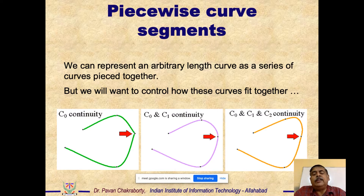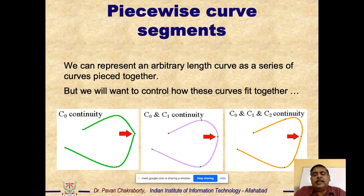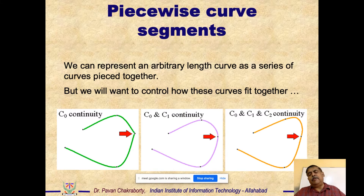The mathematics we develop will be for C1 continuity; you can then extrapolate it for C2 or any nth order continuity. The idea is: if a smooth curve with C1 continuity suffices, why go for higher continuity? Higher continuity means more parameters and more equations to compute, taking more time.